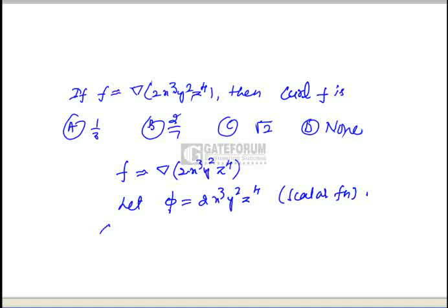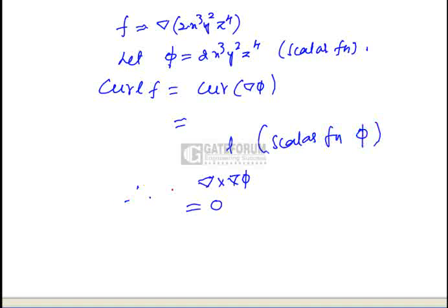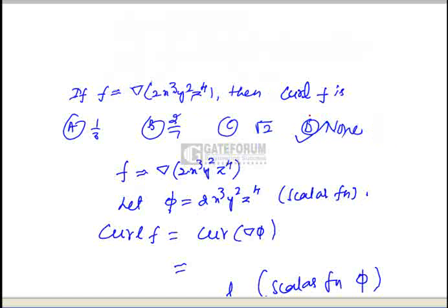We have to find curl f. Curl f is nothing but curl of del φ. We also know that curl(del φ) is nothing but del cross del φ, which will always equal zero for any scalar function φ. Therefore, curl of f is 0, which corresponds to option E.